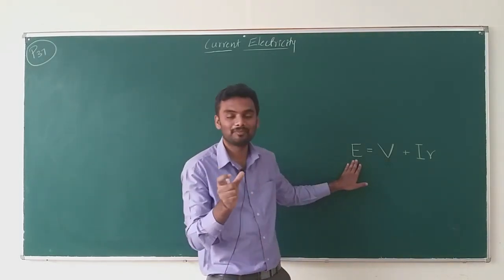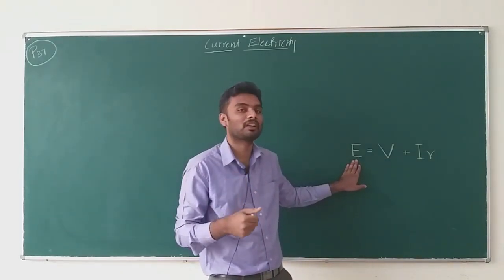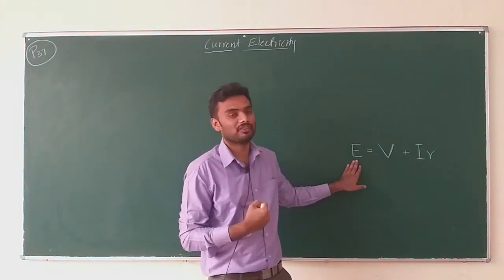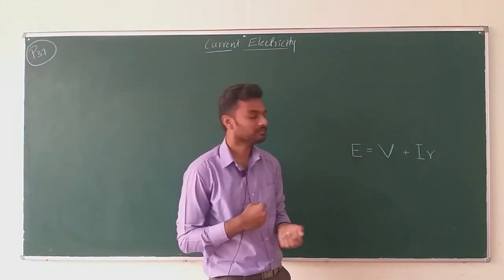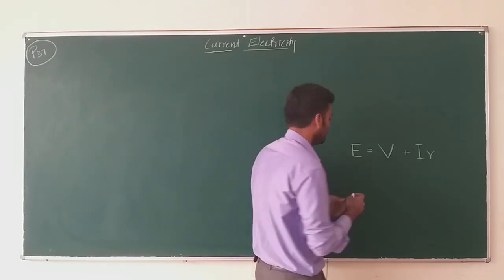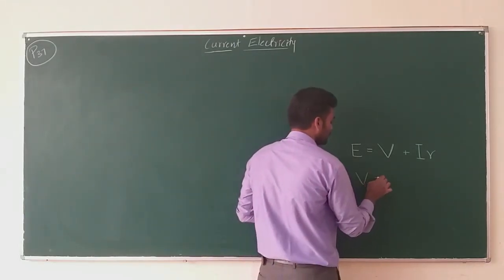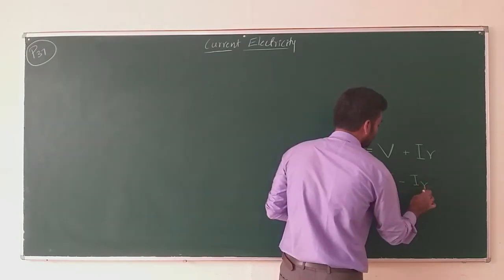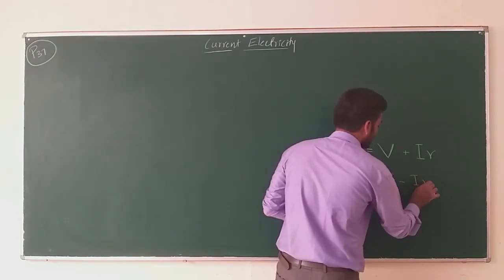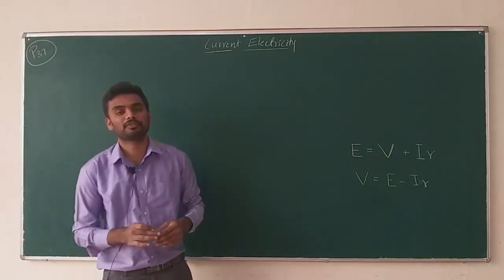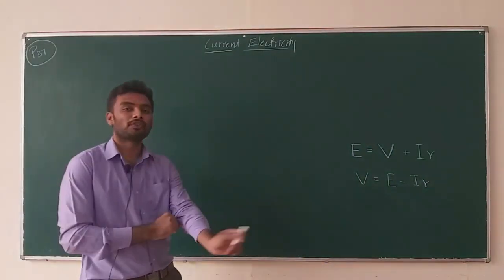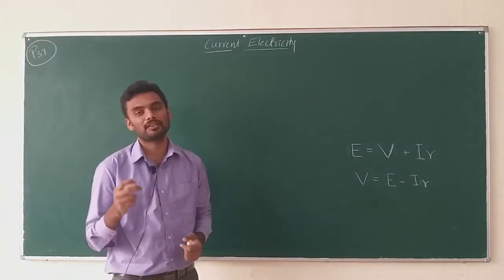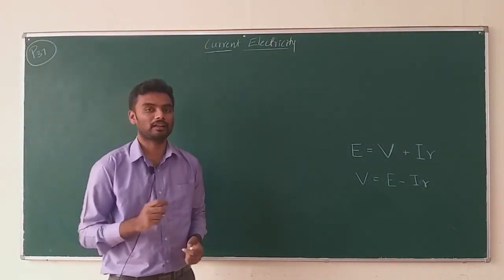E is the EMF of the cell, which represents the maximum ability of the cell. So V becomes equal to E minus IR. Using this very same expression, today we are going to derive expressions for two cells connected in series and two cells connected in parallel.